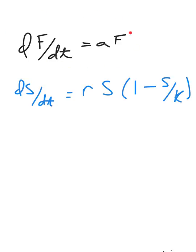df/dt equals af. Let's say that's a population equation, where f is our population of fish, t is time, and a is some kind of growth factor in the equation.